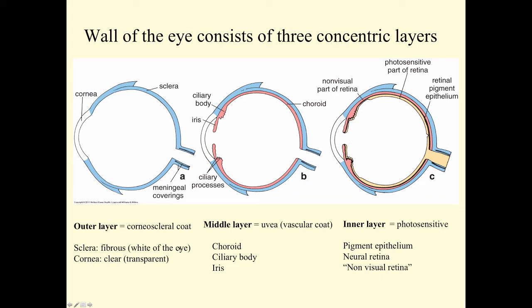The outer layer has the sclera and the cornea. The middle layer, the uvea, would be the choroid, ciliary body, and iris. And the photosensitive layers, the pigment epithelium and the neural retina. And then there's a non-visual part of the retina. In the cartoons we're going to show through these podcasts, the outer layer is represented by the blue, the middle layer by the red or pink color, and the inner layer highlighted in yellow with the black around it, the black to represent the pigment epithelium.